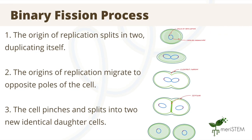Here is what the process of binary fission looks like. Note that this involves a prokaryote with circular DNA. Replication starts at the origin of replication, which splits into two, duplicating itself — we can see this origin of replication in red at the top of the diagram on the right. Next, the origins of replication migrate to opposite poles of the cell, and the rest of the DNA is duplicated as this happens. The cell then pinches to make a cleavage furrow, and eventually this pinch results in the split of the cell into two identical daughter cells.